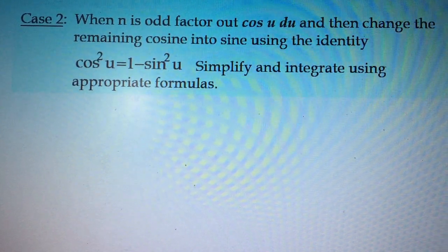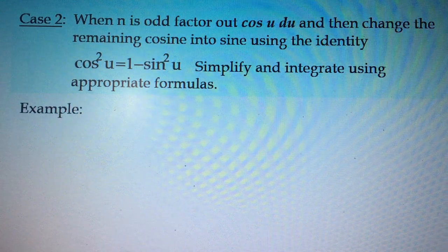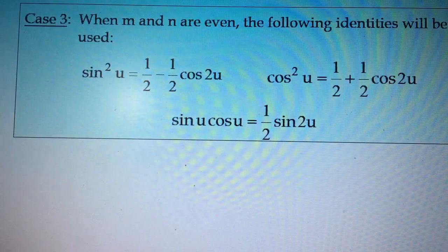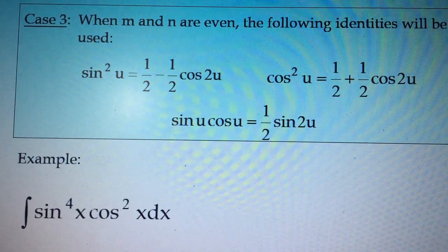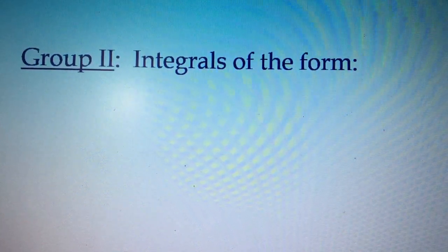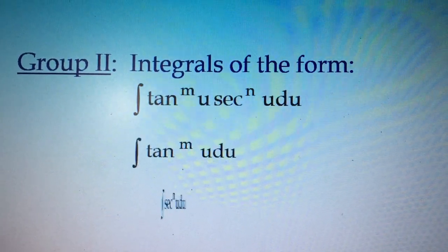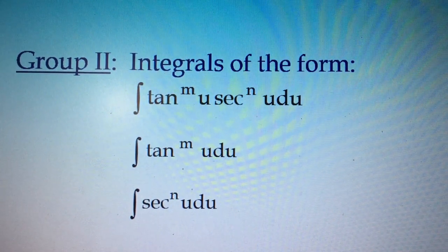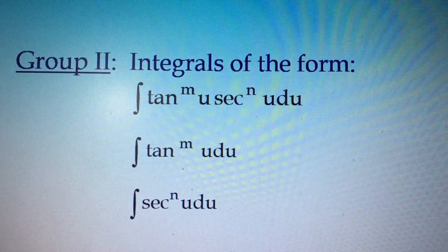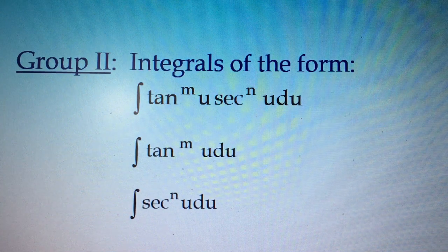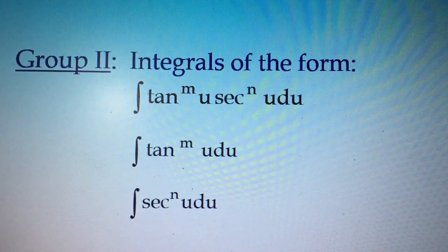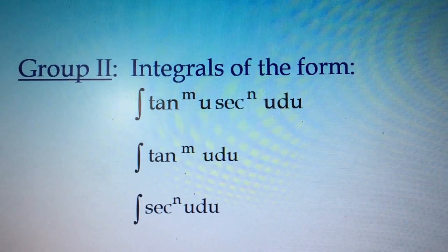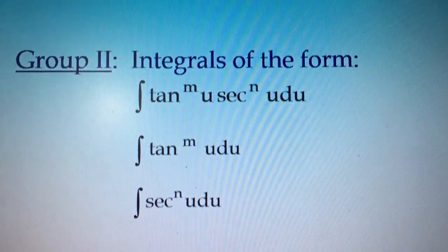Then we have Case 2 and we solved one example also, and then we have Case 3. After that we discussed Group 2. Group 2 is in the form of tangent and secant, or sometimes a combination of tangent and secant. There are times you encounter only the integral of tangent, and also sometimes you will encounter the integral of secant only — same condition where M and/or n are positive integers.